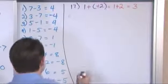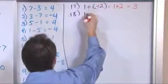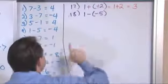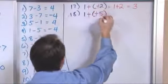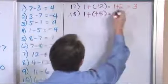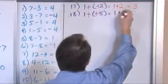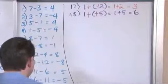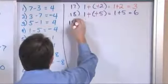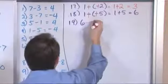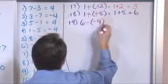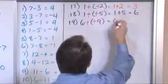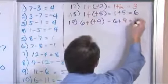For number 18, we have 1 minus a negative 5. We have subtracting a negative, so we add the opposite — so what we're going to have is 1 plus 5, and that's equal to 6. And problem 19: 6 minus a negative 9. Subtracting a negative, so we add the opposite — this is going to be 6 plus 9, and that's going to be 15.